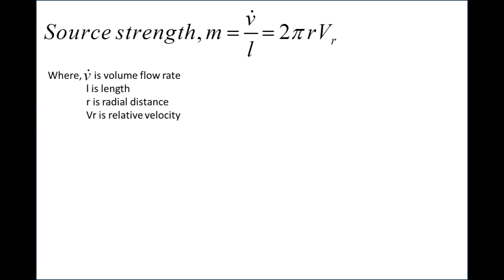Source strength is the volume flow rate per unit length which is equal to 2 pi r Vr. Where V dot is volume flow rate, l is length, r is radial distance, and Vr is relative velocity.